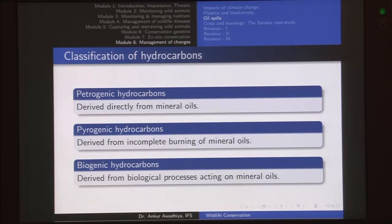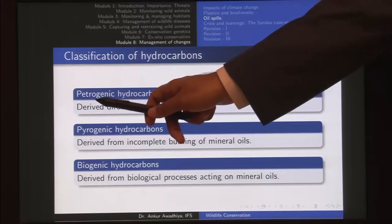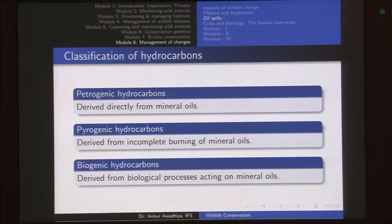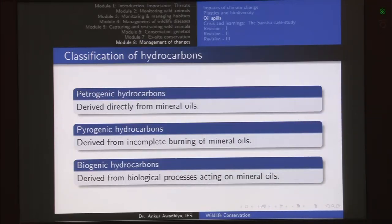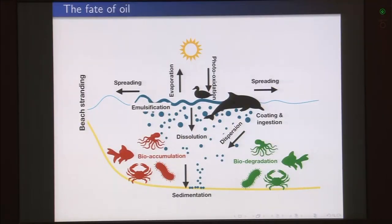Another classification deals with how hydrocarbons are formed. Petrogenic hydrocarbons ('petro' = rock, 'genic' = formation) come directly from rocks or petroleum without further processing. Pyrogenic hydrocarbons are derived from the incomplete burning of mineral oils — if you burn mineral oil and something else comes out, it is called pyrogenic. Biogenic hydrocarbons are derived from biological processes acting on mineral oils. Understanding these types matters because of their impact on biodiversity.